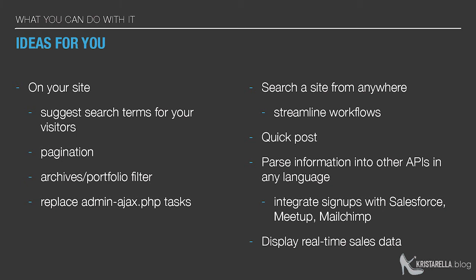Some examples of what you could do with the REST API: you could suggest search terms for visitors — they start typing in a search box and a script starts searching the site for likely completions, kind of like what Google does. You could use pagination to get the next set of posts without reloading the page. You could do an archive or portfolio filter — buttons for year or category that show posts without a page reload. You can pretty much replace your admin-ajax.php tasks with the REST API, because admin Ajax is kind of slow and resource intensive.